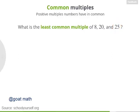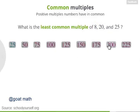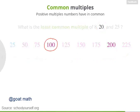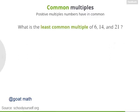So here are the first few multiples of 25 up through 225. Now in this list, you're looking for a number that's also a multiple of 20 and a multiple of 8. What is the smallest such number? Nicely done! Which of these numbers are multiples of 20? That would be 100 and 200. And of these, which is also a multiple of 8? That would be 200. So 200 is the least common multiple of 8, 20, and 25. So for your final challenge, try finding the LCM of 6, 14, and 21.